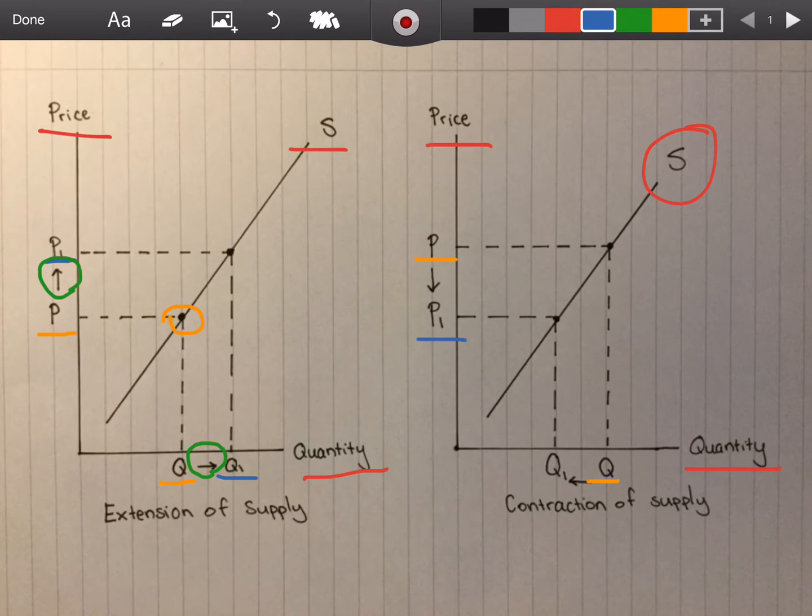The price drops from P to P1 which results in a contraction in supply and we can see that here. There's a reduction in quantity supplied from Q to Q1.